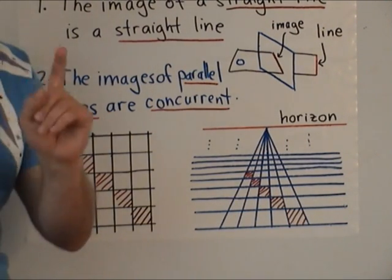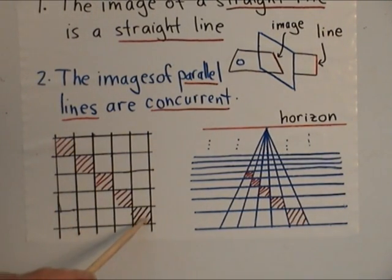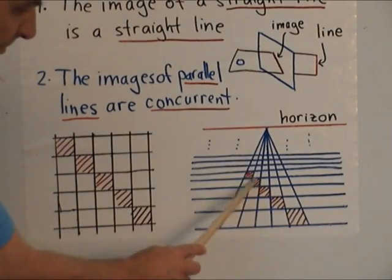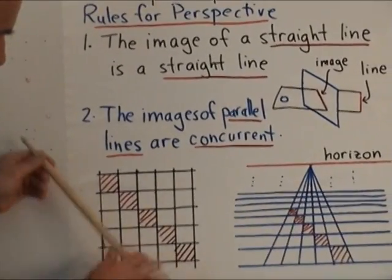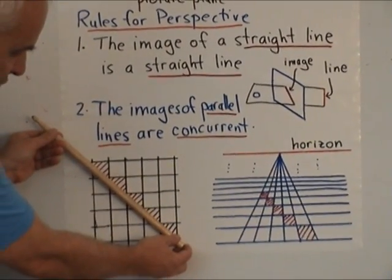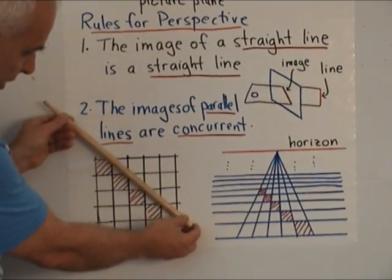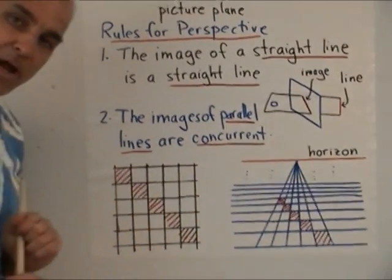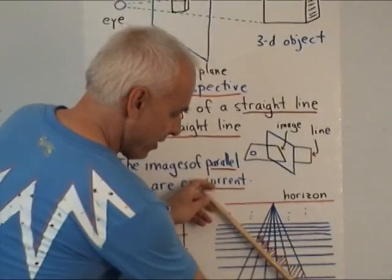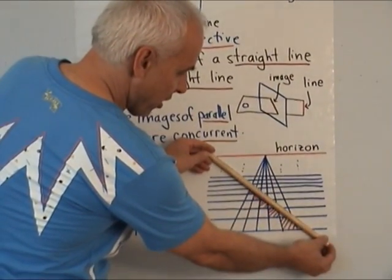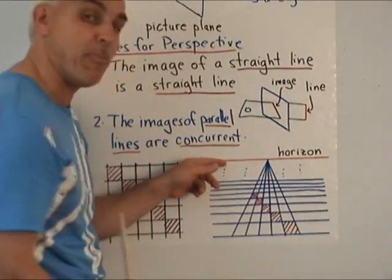And it turns out that the key idea is to think about diagonals. So here I've got a bunch of diagonal squares, and here are the images of them. And the crucial observation is that if you look at diagonal lines in this picture, that those are also parallel. And so over here they must correspond to lines which are concurrent at a point at infinity.